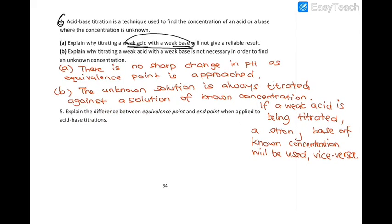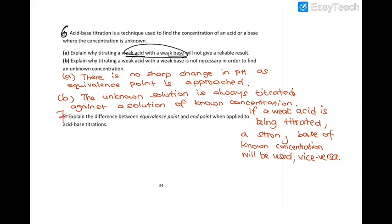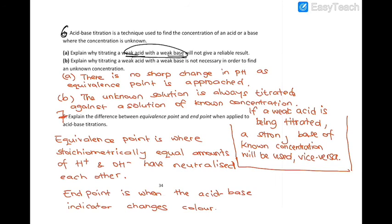Number 7: explain the difference between equivalence point and end point. The equivalence point is where stoichiometrically you have equal amounts of acid and base — equimolar H⁺ and OH⁻ ions. The end point is when the acid-base indicator changes colour.